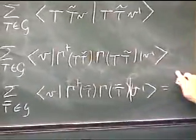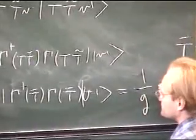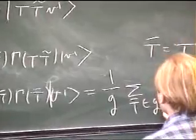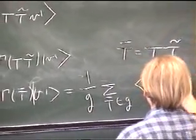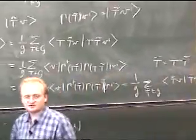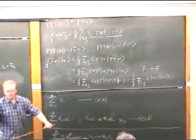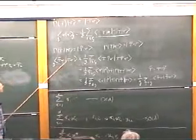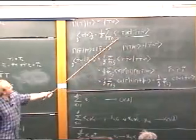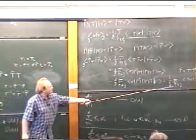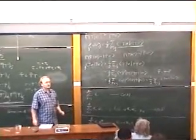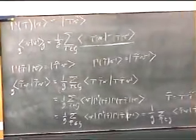And this is equal to 1 over |G|, sum over t̄ element of G, of t̄v, t̄v prime. But that's the inner product that we would have gotten if we had just taken the inner product of v with v prime. This is exactly the same as that — meaning the inner product is invariant. So I've got a unitary representation.